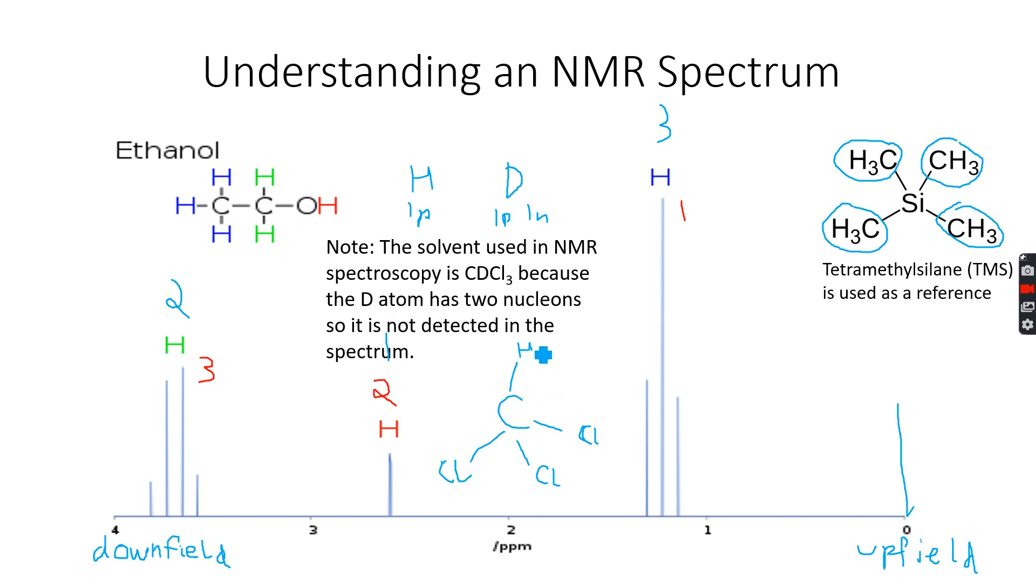We have this hydrogen atom over here and this will give a peak in the NMR spectrum. So when we are trying to detect a compound, this will interfere with the spectrum and confuse us. It will just add another peak, an extra peak, which we don't want.